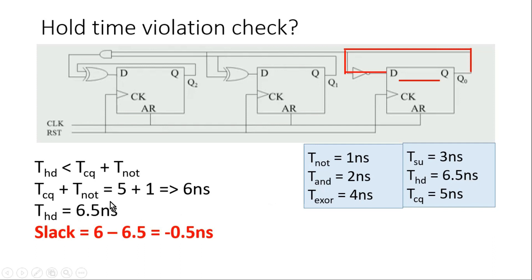The hold time requirement of this flip-flop is 6.5 nanoseconds. Checking the condition: hold time is 6.5 ns but tcq + t_NOT is only 6 ns — this equation is violated. The slack is 6 − 6.5 = −0.5 nanoseconds, which is negative. Negative slack means there will always be a hold violation.